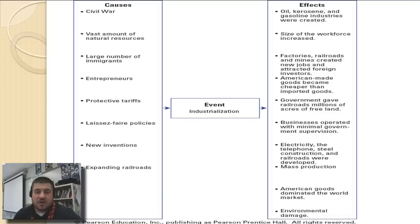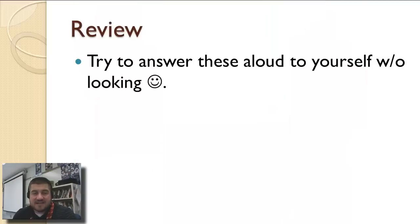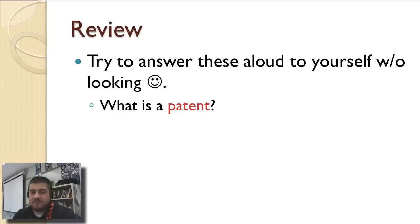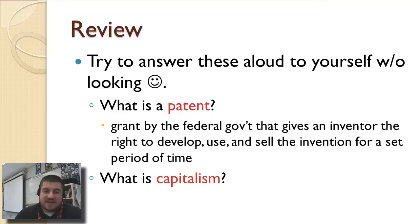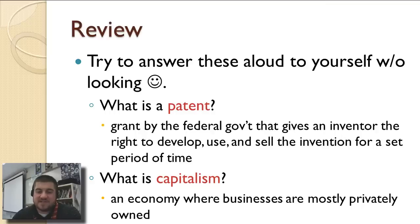Let's wrap up with a review of our two main definitions. A patent is a grant by the federal government that protects the inventor, giving them the right to develop, use, and sell their invention for a set period of time. Capitalism is an economy where businesses are privately owned by individuals like you and me. That's an overview of industrialization during the late 1800s.